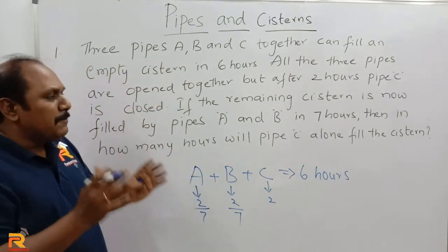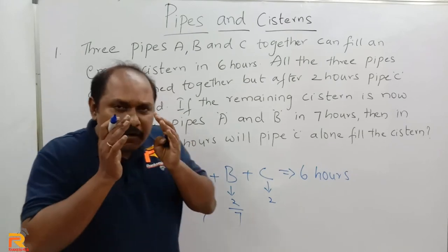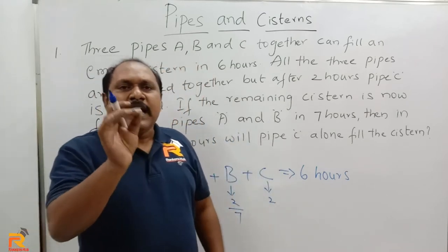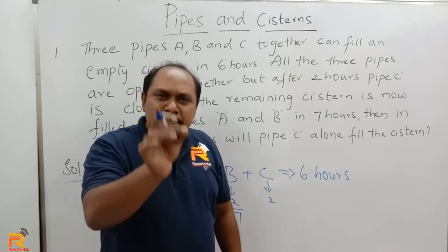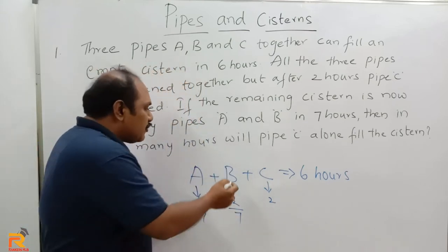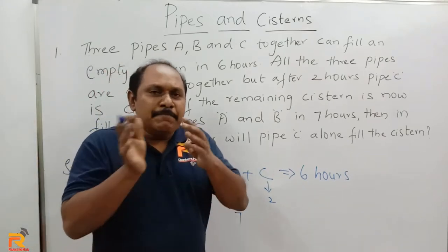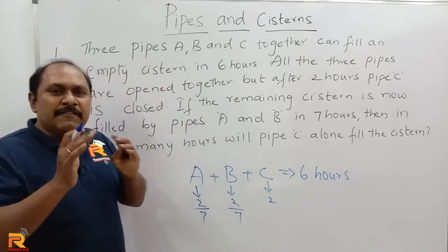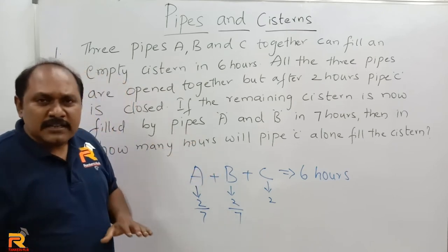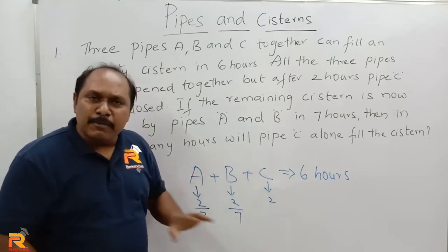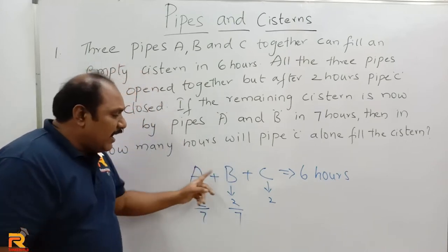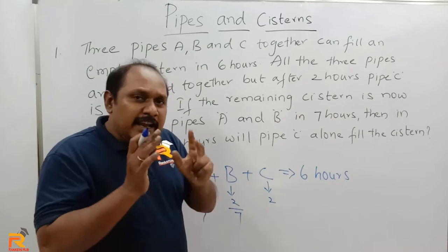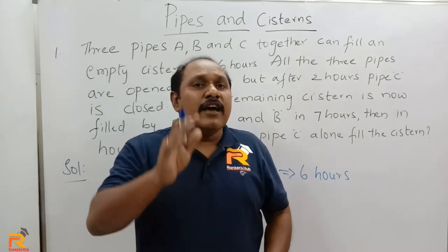The question is: in how many hours will pipe C alone fill the system? Now, A and B are opened totally for two plus seven — that is nine hours. But actually, A and B should be opened only for six hours. They are opened for nine hours. What are they doing in that extra three hours?